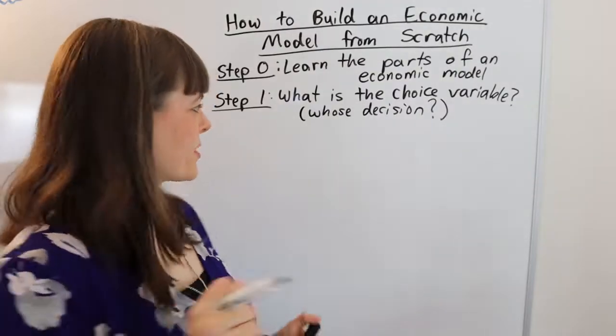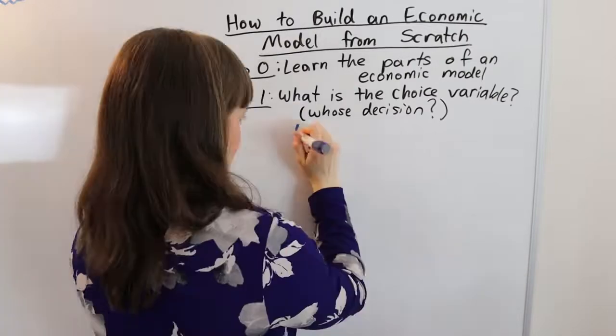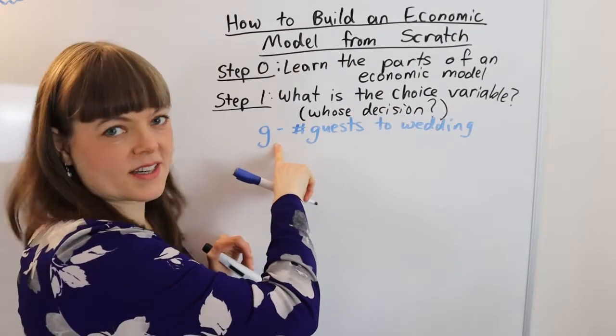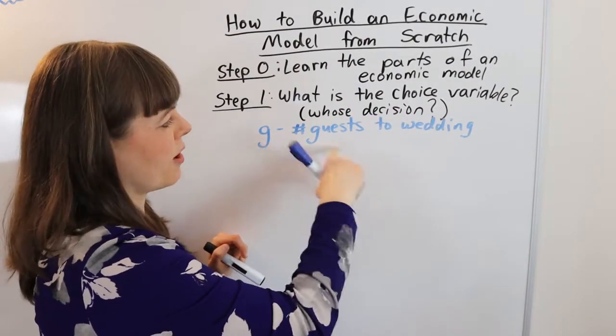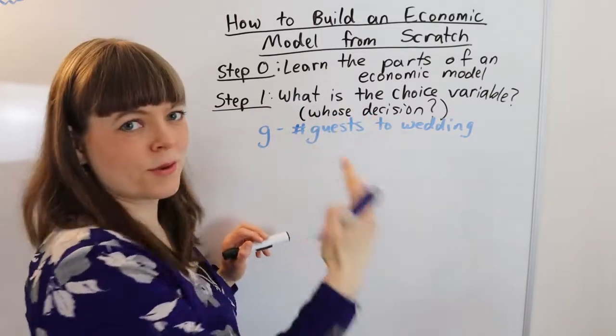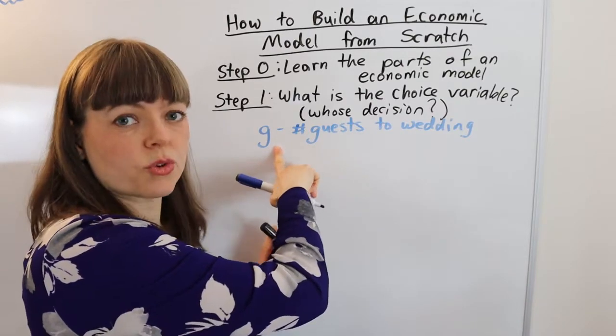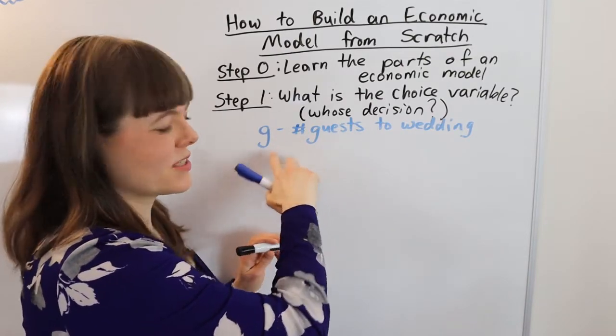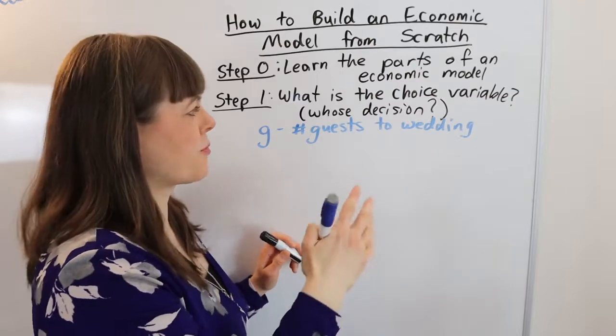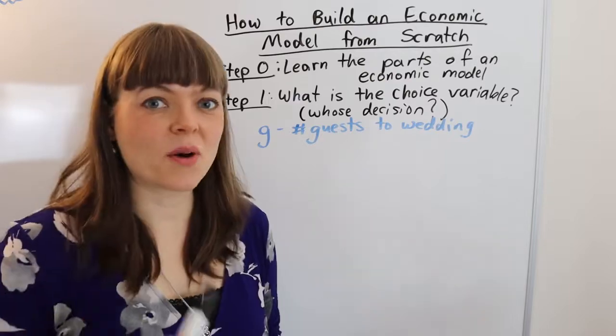And for this video, I'm going to model the number of guests to invite to your wedding. And of course, you want to name that with a variable. So I'll let G be guests. Now it's really important that you understand whose decision you're modeling to make sure do they actually have control over that. And so this perspective of this model is from the perspective of the bride and groom collaborating to decide about their wedding.